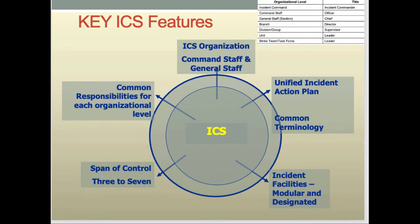We have different elements that work together — these are the key features to remember. You're only responsible for your level of organization, and you're only responsible for three to seven people — that's called the span of control. When you have too many people, you break out and find a new leader. You have a unified action plan that gets put together every day or when the commander changes over, and there is organized staff with command staff and general staff below it.